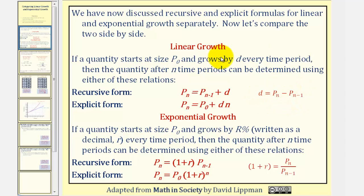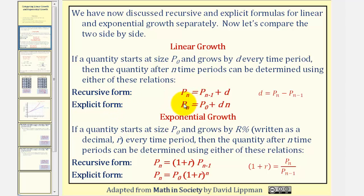For linear growth, the explicit equation is p sub n equals p sub zero plus d times n. For the explicit equation, we can find p sub n directly knowing the value of n.